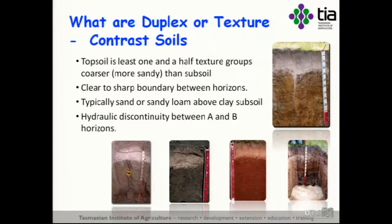So what are the soil texture contrast soils? Essentially the duplex or texture contrast soils have one and a half texture groups — coarser or more sandy top soils than the sub soils — and they have a clear to sharp boundary between horizons. Typically you get sands or sandy loams sitting above a medium clay, and the key feature in terms of their hydrology is this discontinuity between the A and B horizons: suddenly going from a sand to a clay.